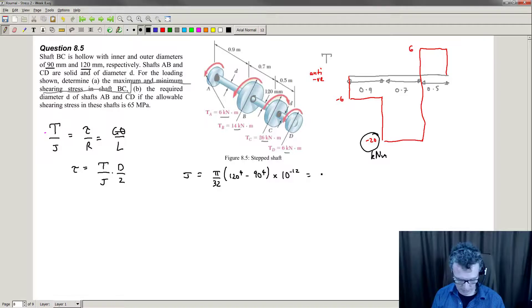So 120 to the power of 4, take away 90 to the power of 4, divided by 32 times pi. It gives me 13.916 times 10 to the minus 6 meters to the power of 4. So that's the J.